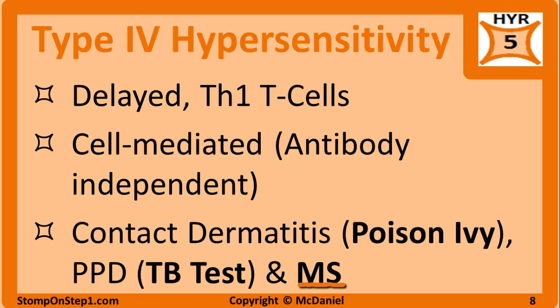One thing often confused is contact dermatitis — type 4 hypersensitivity — with atopic allergic reactions, which are type 1 hypersensitivity. Both involve dermatologic problems as a result of hypersensitivity, but they act via different mechanisms. The key to differentiate the two is the timeline: atopic problems form within minutes of exposure, while contact dermatitis takes days. There is also often a clinical hint, such as the patient having been in the woods a few days ago, pointing toward poison ivy.